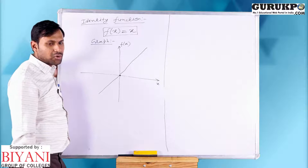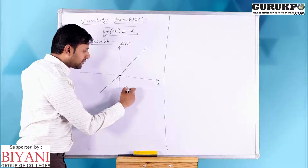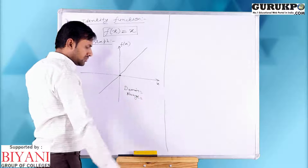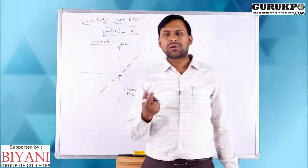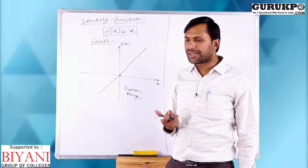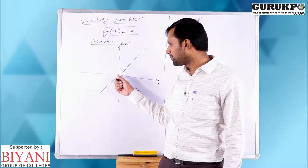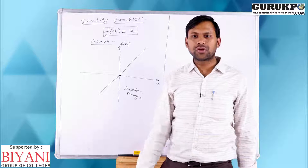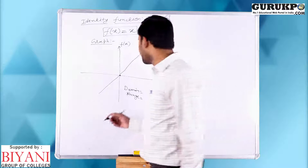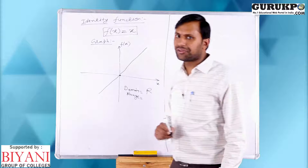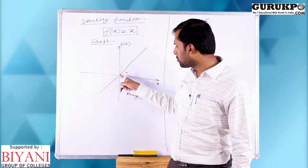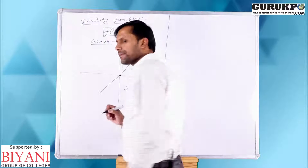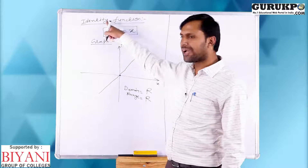For the identity function, domain means possible values of x. Here x can be anything: 0, positive, or negative, so it is defined on all values of x. That means domain is R, the real numbers. Similarly, range is also all real numbers — positive, negative, or zero — so range is also R.